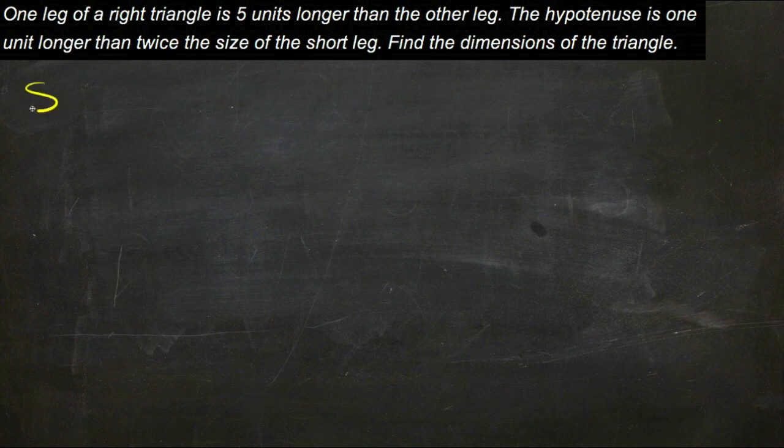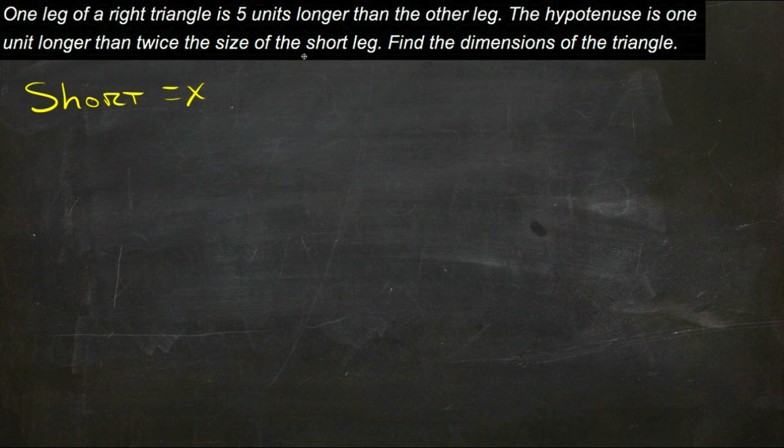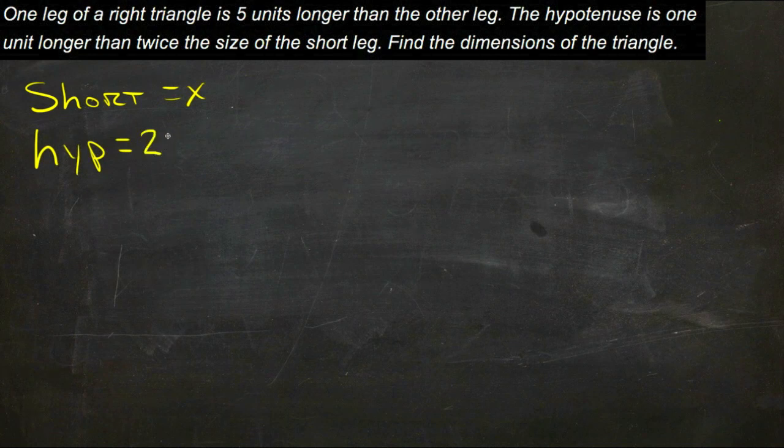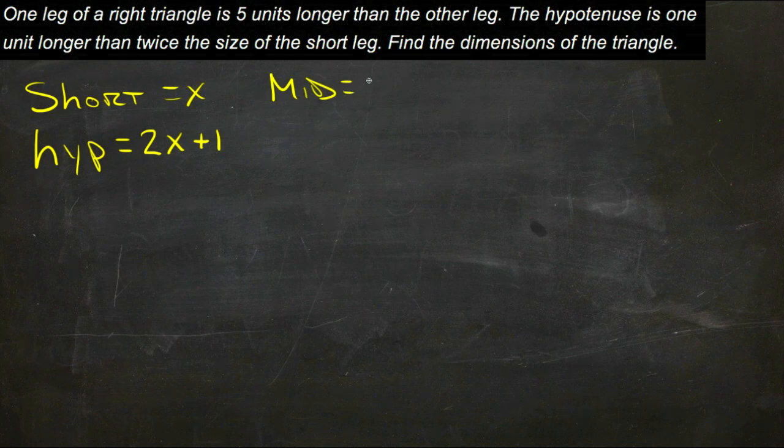So we're going to let the short leg be x, then the hypotenuse is one unit more than twice the length of the short leg, so the hypotenuse would be two times the short leg plus one, and the middle leg is five units longer than the short one, so it's x plus five.